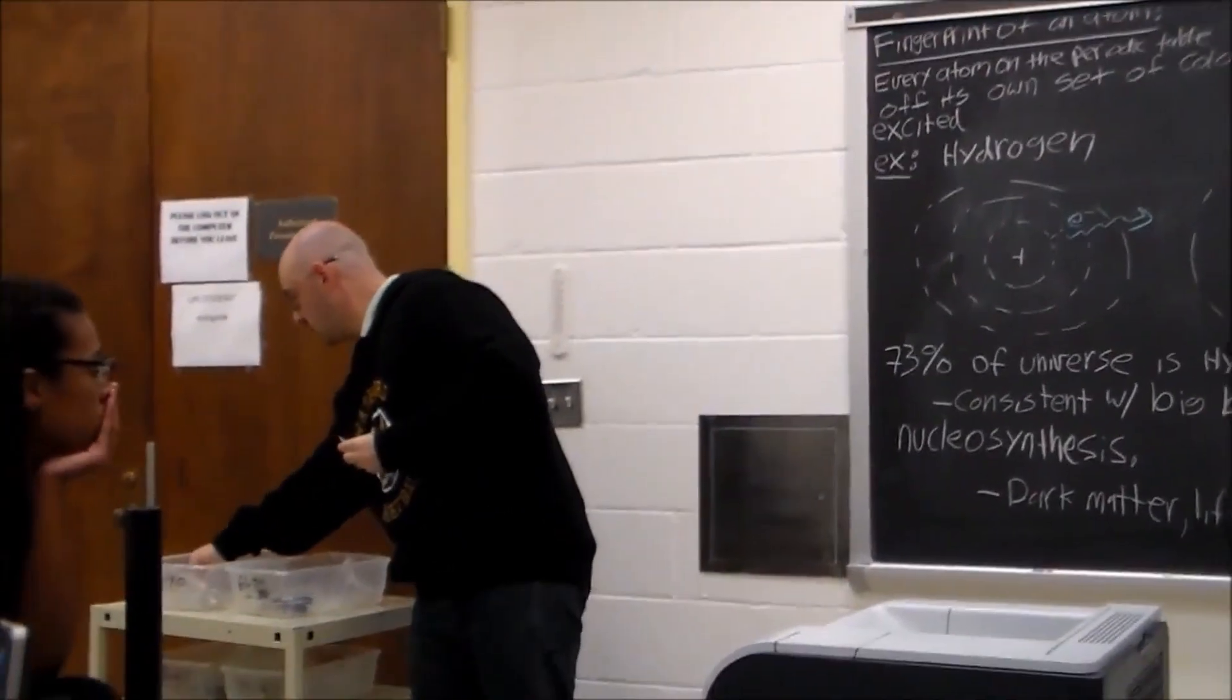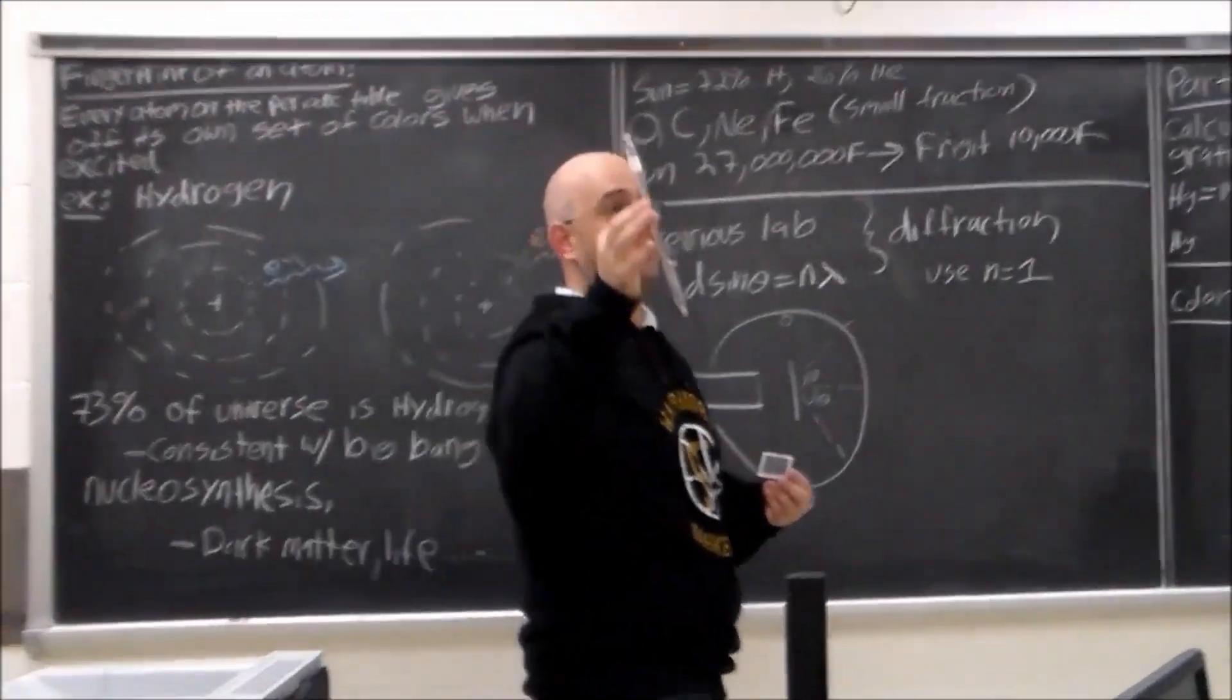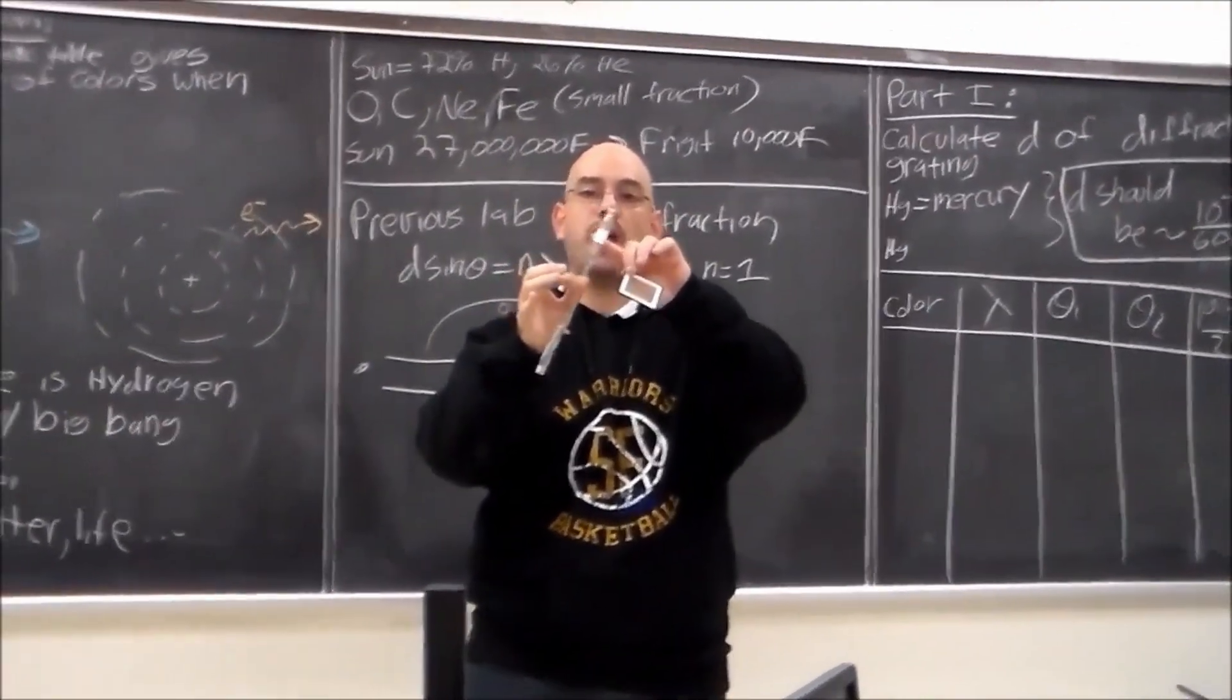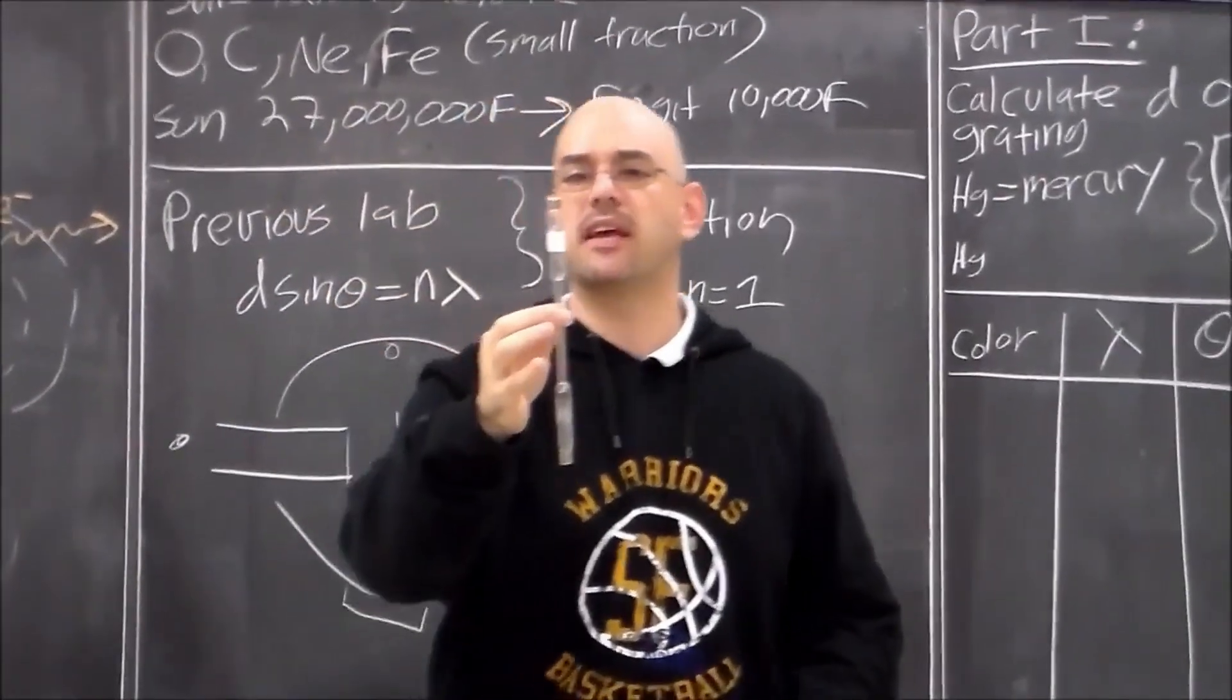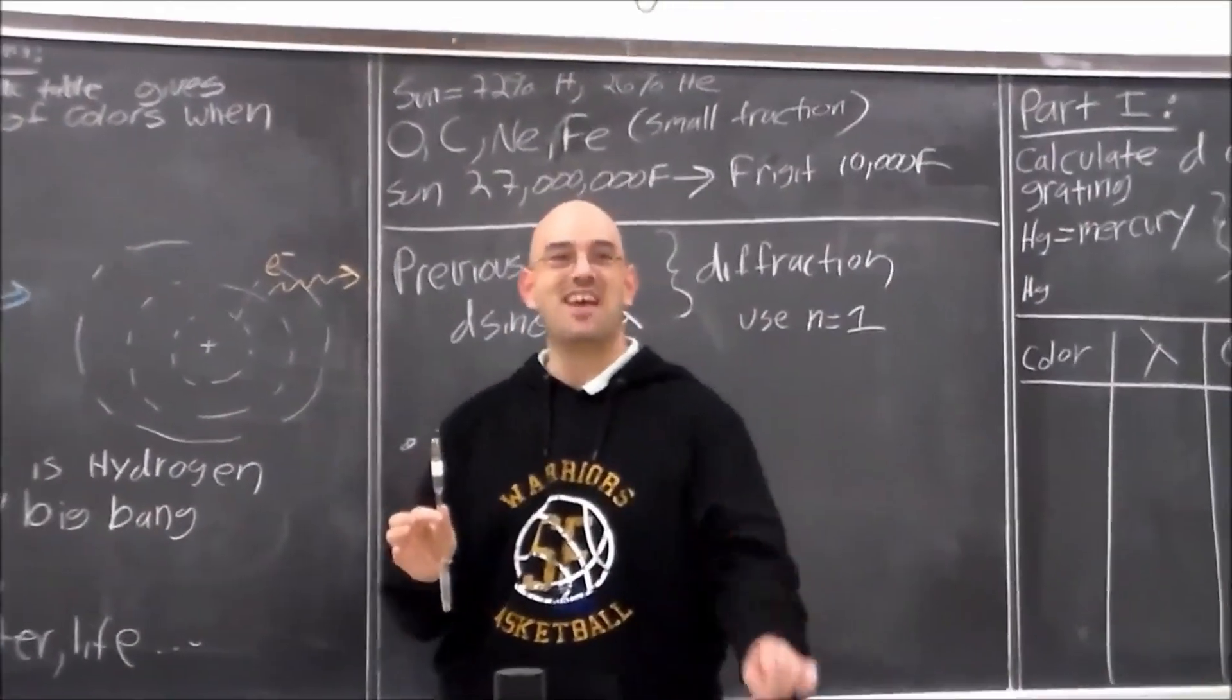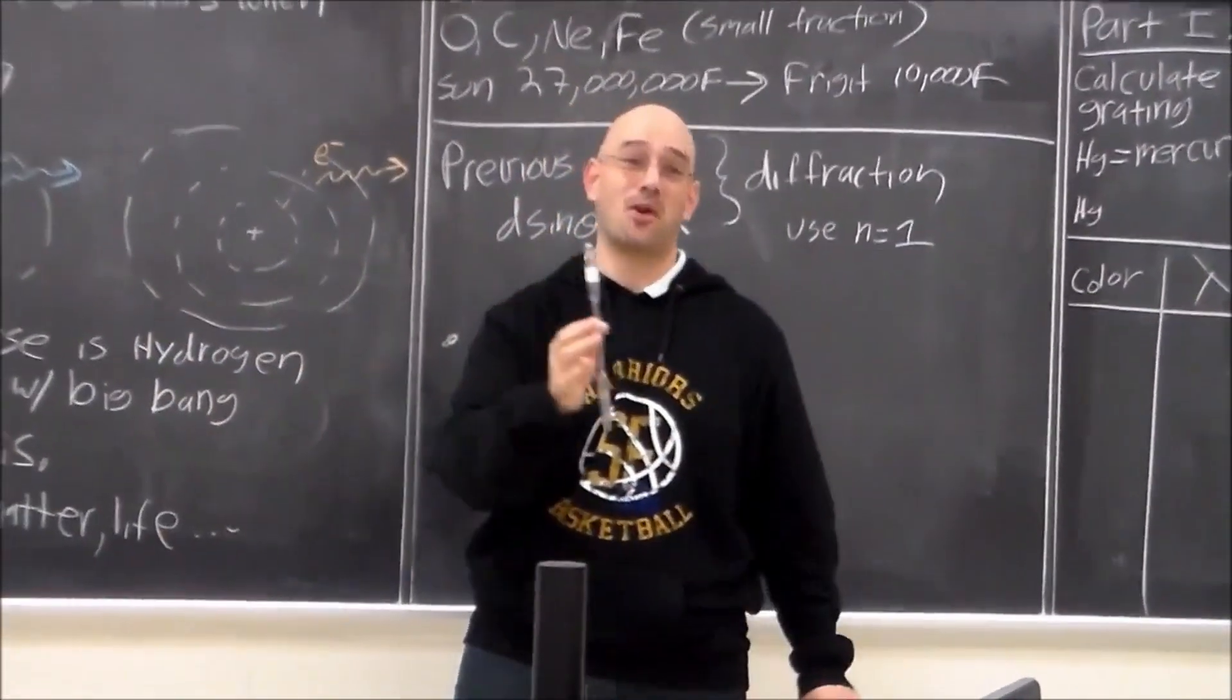So in this lab, there are these glass tubes with different atoms. There's a gas of atom inside here. The one which has a white strip on here, this is mercury. Mercury is poisonous. So please don't break this. Don't break the other ones, although it's funny. In my last section, I told everyone, don't break these, and someone dropped the whole thing.